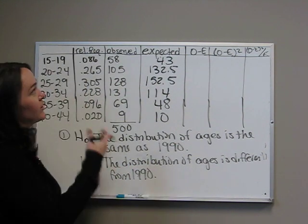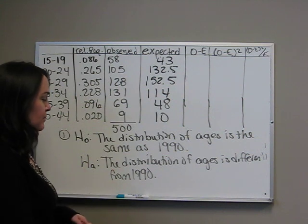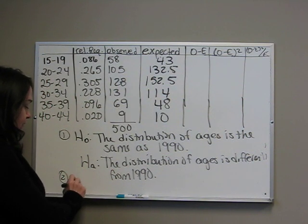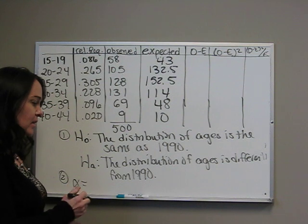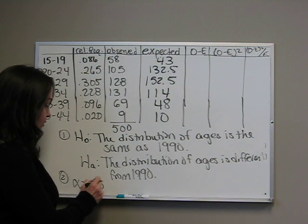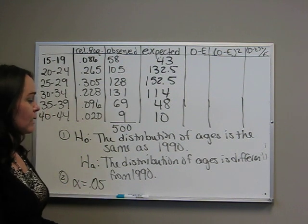I'm going to have to erase some of our information. The second step is our alpha, and we're going to test at the 5% significance level. So alpha equals 0.05.